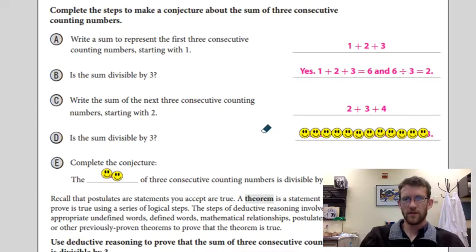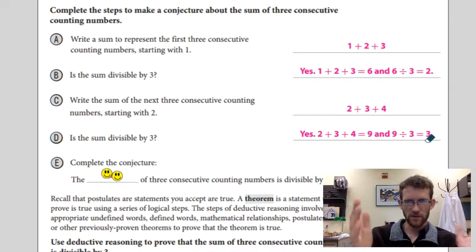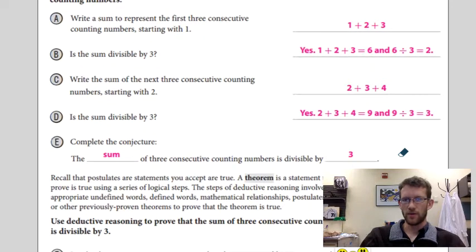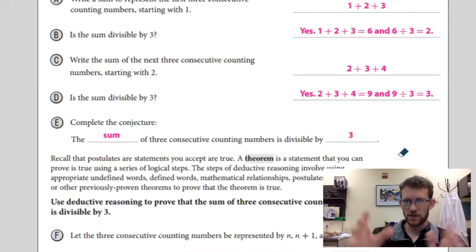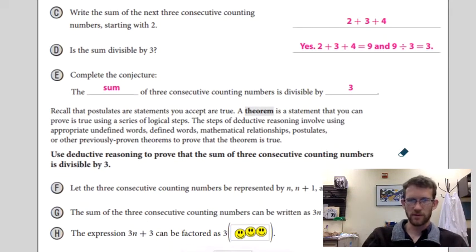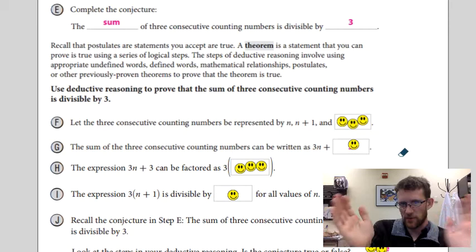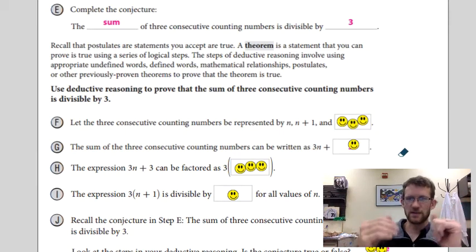Is that divisible by three? Yes. So our conjecture just based on two examples now is that any three consecutive numbers added together give us a value that's divisible by three, right? We come up with this conjecture just based off a few examples. That's inductive reasoning. But inductive reasoning isn't very solid. We want to get a nice deductive reasoning to do that.